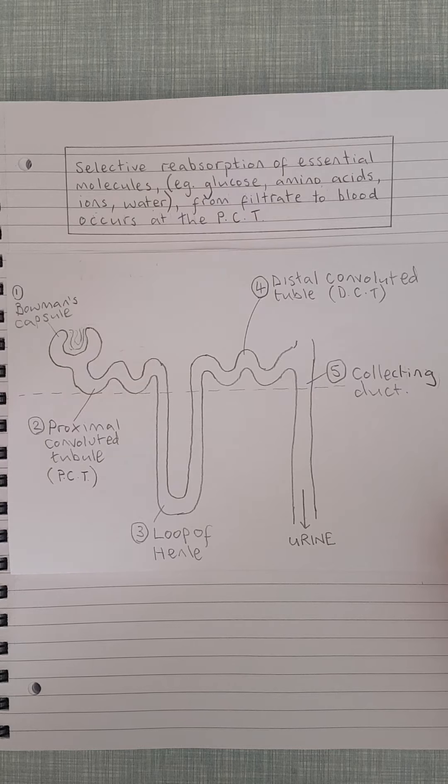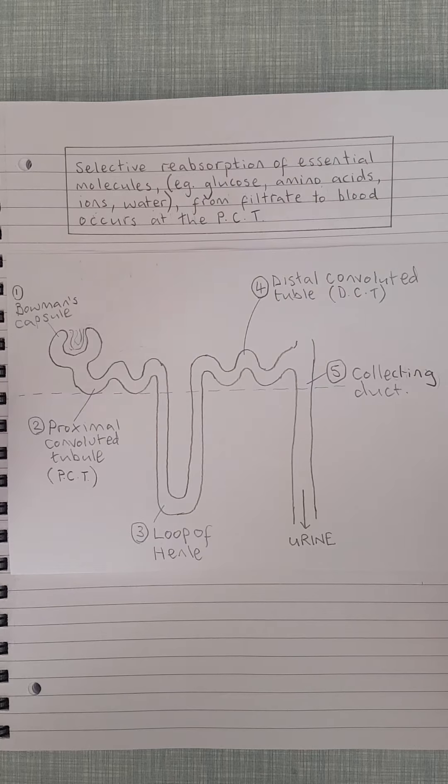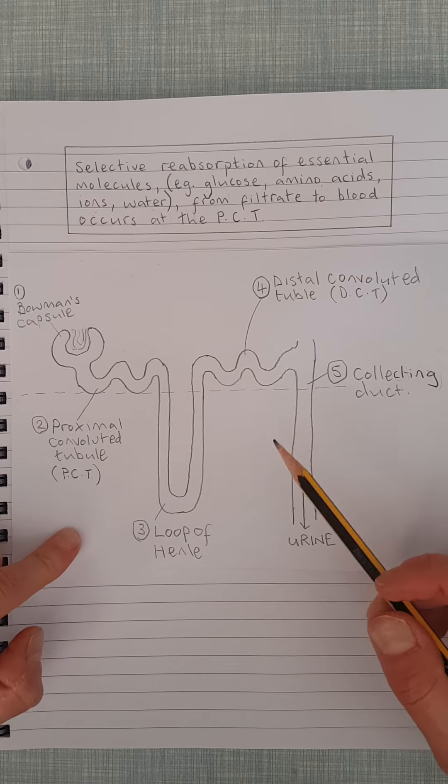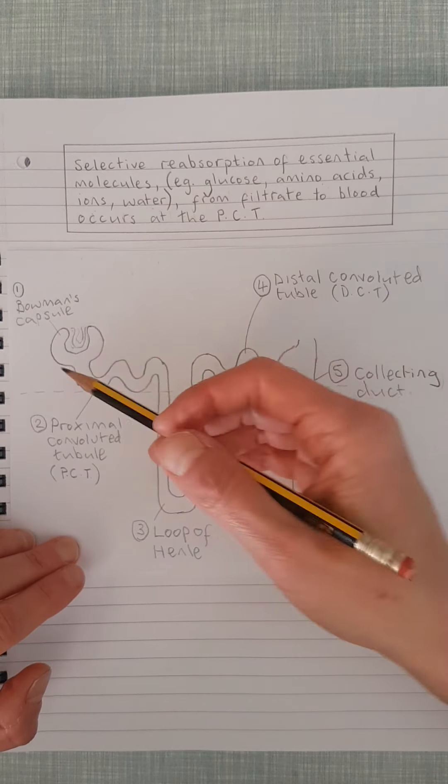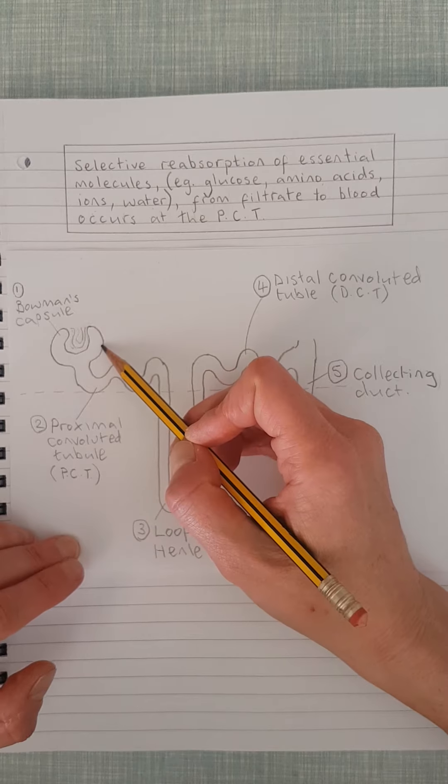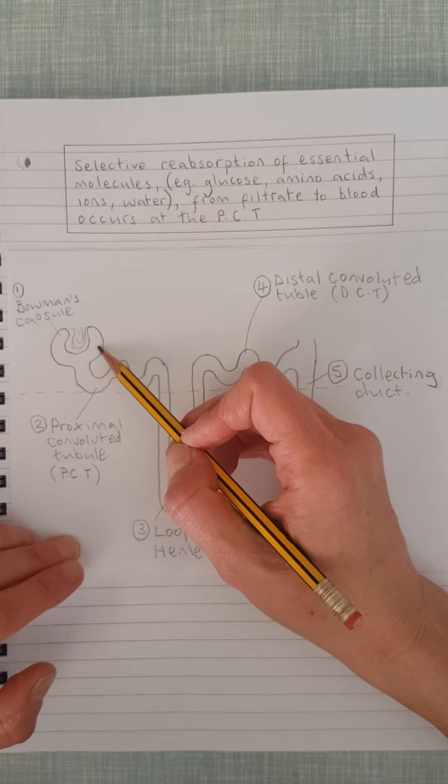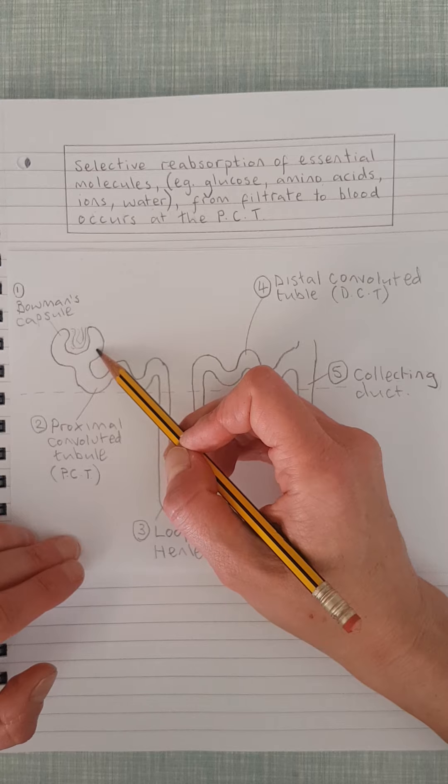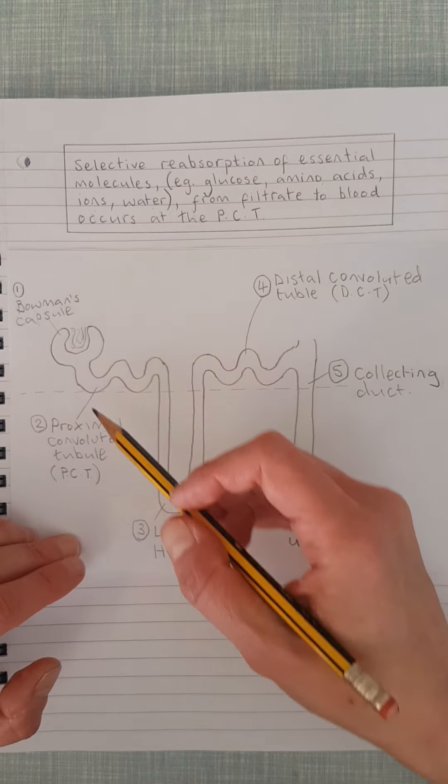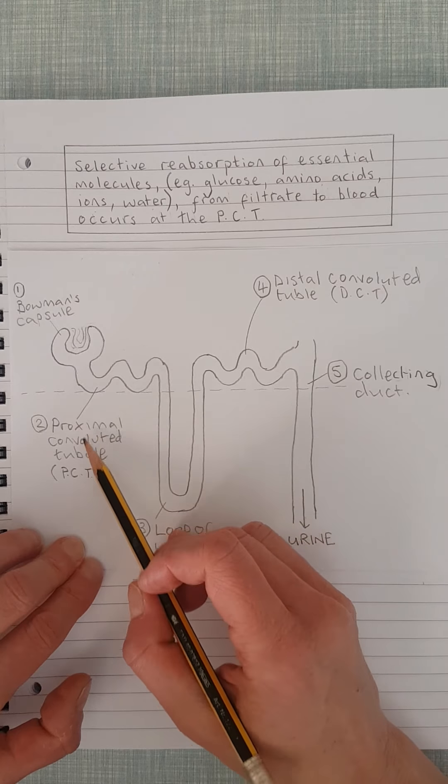Okay folks, so part two of the role of the nephron is all about reabsorption. In the last tutorial we talked about the role of the Bowman's capsule in filtering out pretty much everything from the blood—all the things that you don't need but also all the things that you need.